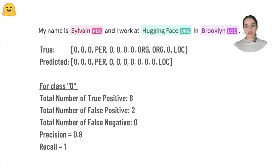Token classification models are evaluated on accuracy, recall, precision, and F1 score. The metrics are calculated for each of the classes.